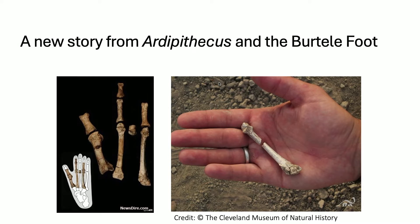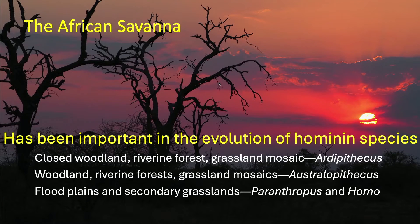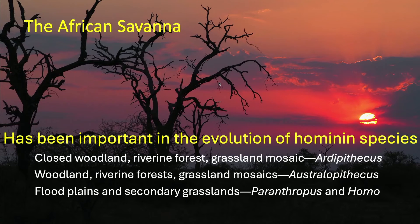We also have new evidence from Ardipithecus and the Burtele foot. These hominids are definitely hominids, they have an opposable toe and grasping feet — they definitely climbed. I think this shows how the savannah hypothesis might be refined: the African savanna has been important in the evolution of all hominid species, but not in the same way. For the earliest hominids — Ardipithecus and earlier species — it was closed woodland, riverine forests, and grassland mosaics. For Australopithecus species, more open woodland, riverine forests, and grassland mosaics with no opposable toe. For Homo and Paranthropus species, floodplains and secondary grasslands now appear.